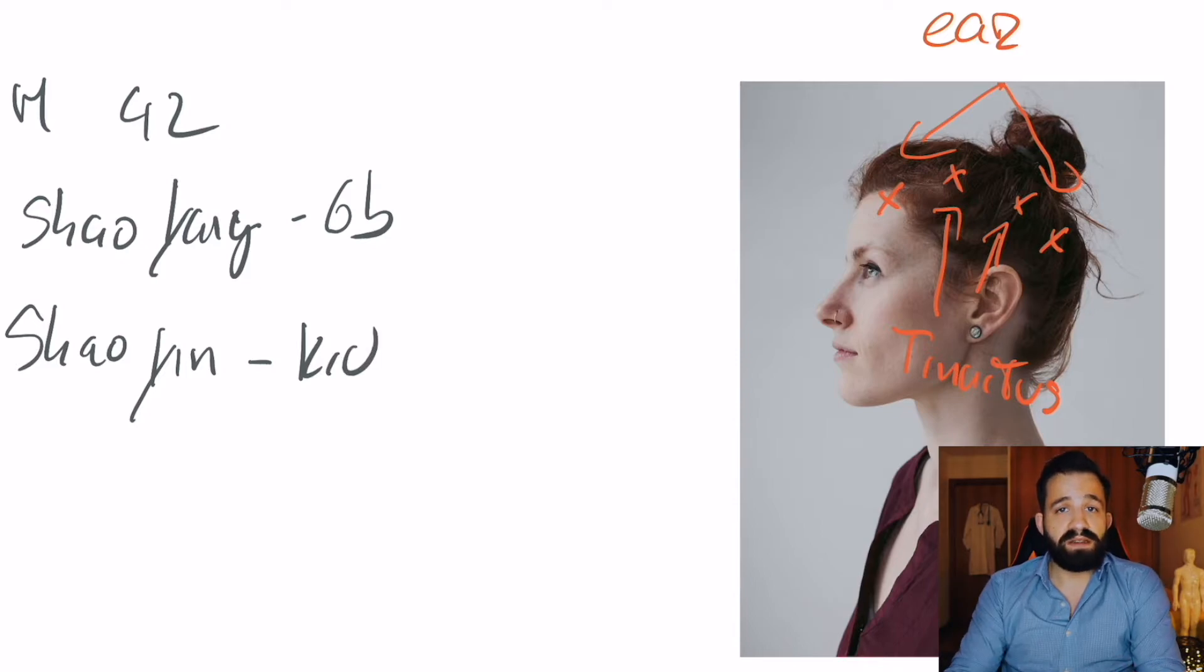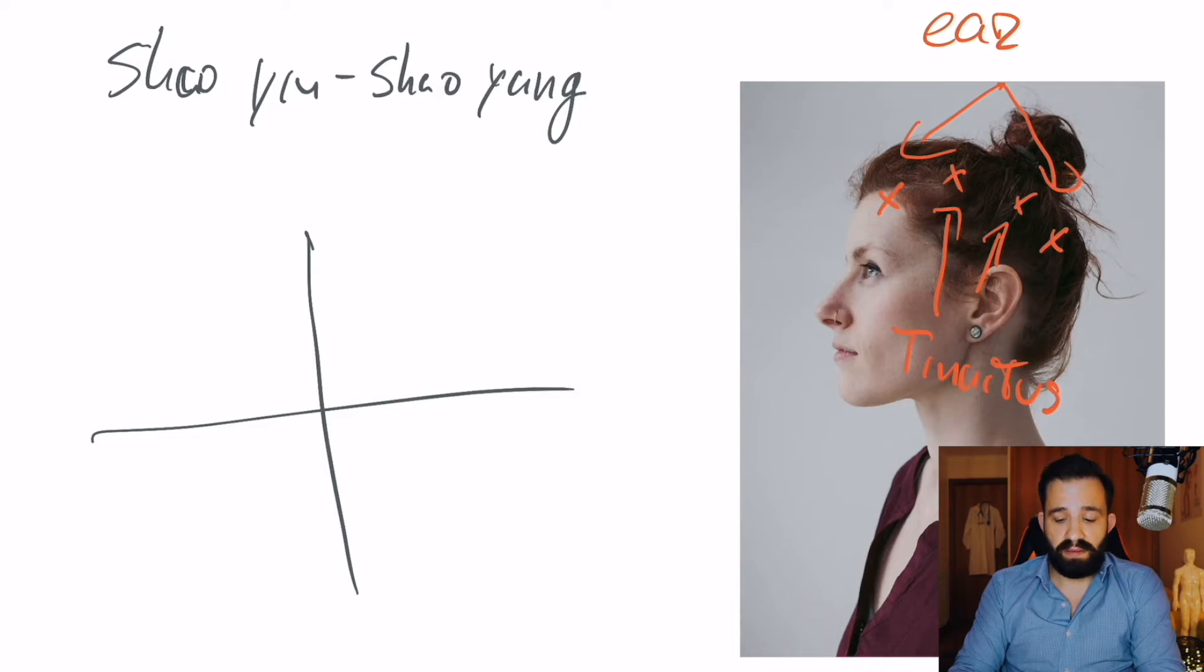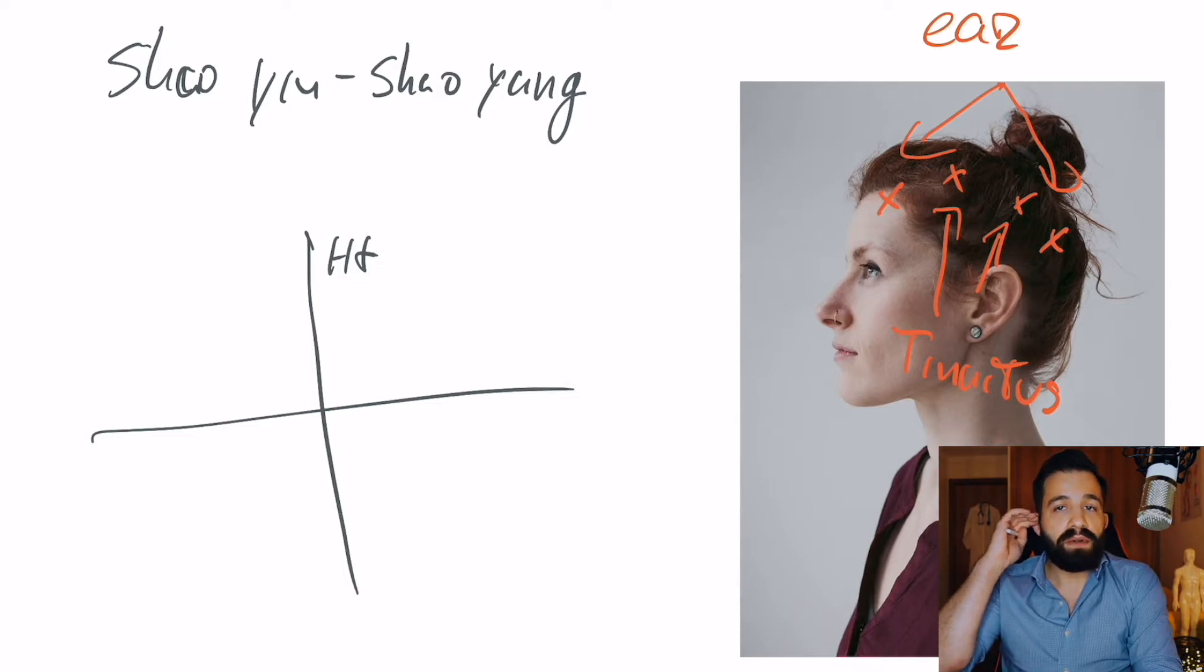So I decided to go for a global balance using Shaoyang-Xiaoyin. So, on one side we'll use the heart channel, the Shaoyang of the hand and for this treatment I used two different images. One, the regular image where the hand will represent the head and also the big image where the full head is represented on a limb. So, the area of the ear will be more or less around the area of the elbows and the knees.